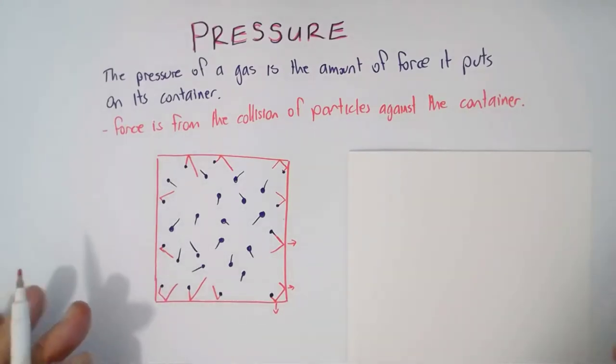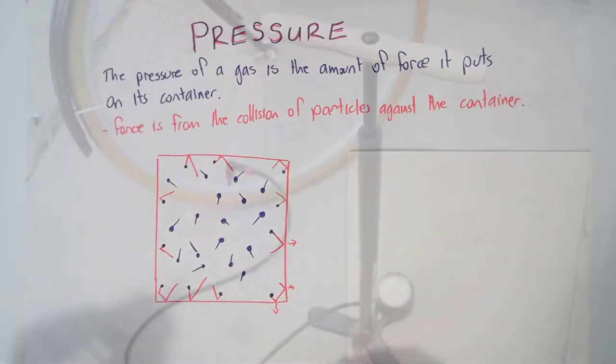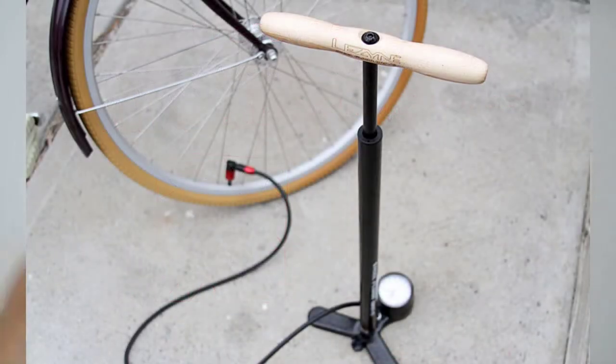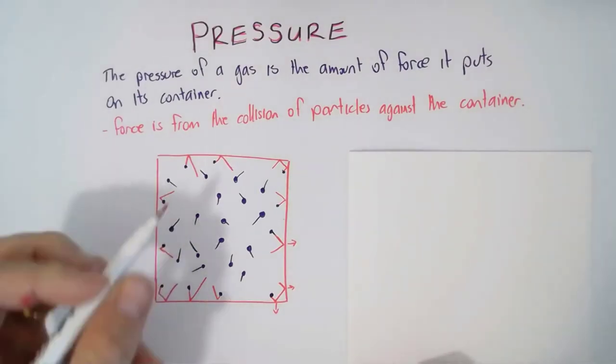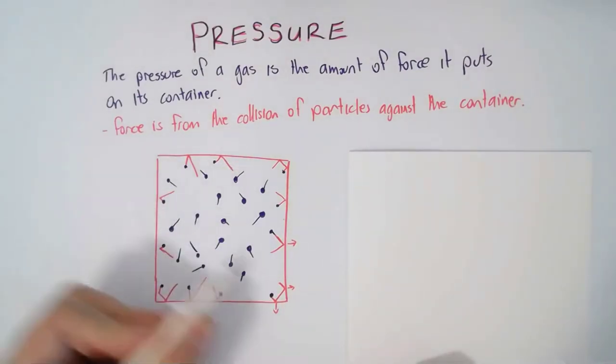So what can we do to increase the pressure? Well, imagine if this was a bike tire and we used a bike pump, and we pumped and pumped. What we'd be doing is putting more air particles in. So more air particles means more collisions and more pressure.